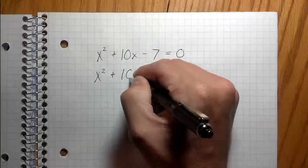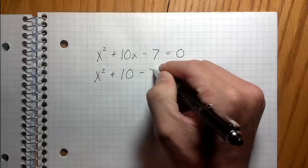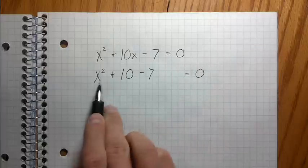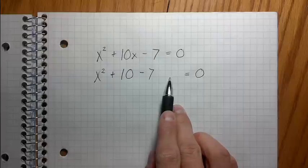So I'm gonna rewrite this equation. x squared plus 10x minus 7, I'm gonna leave a little space here. I'm gonna say equals 0. I just rewrote this but I left a space because I'm gonna add something.